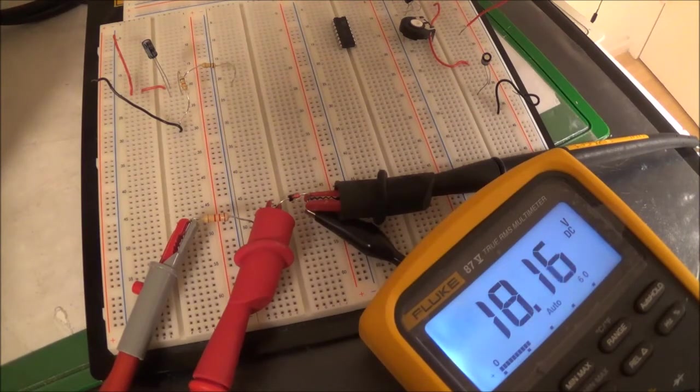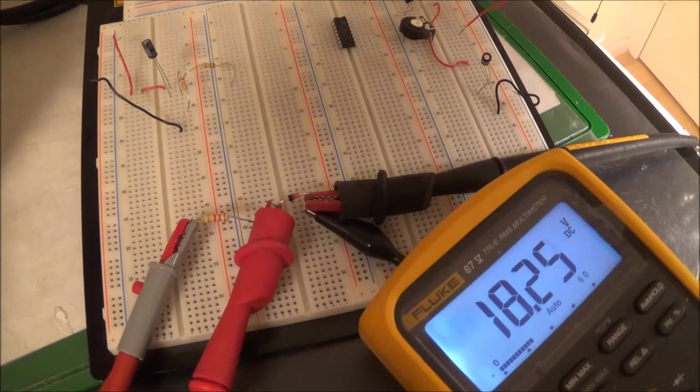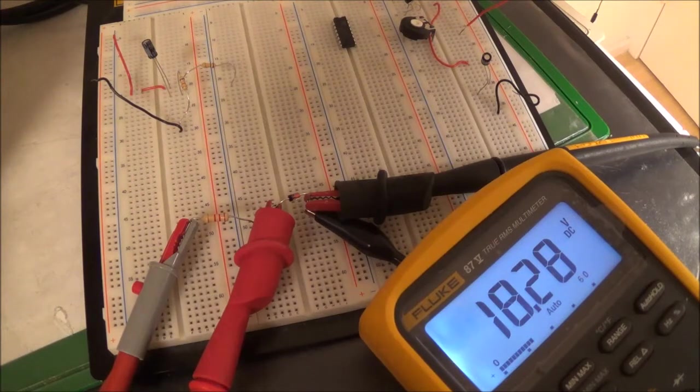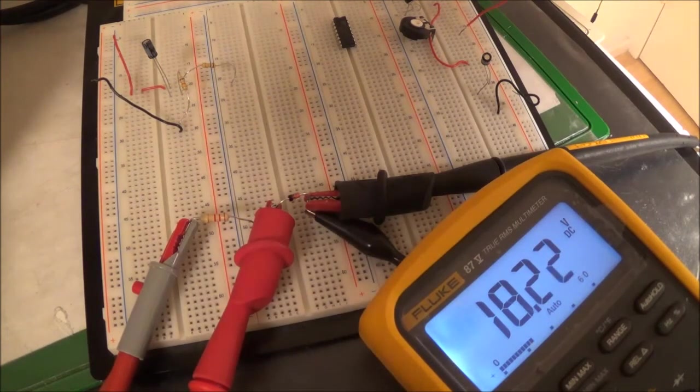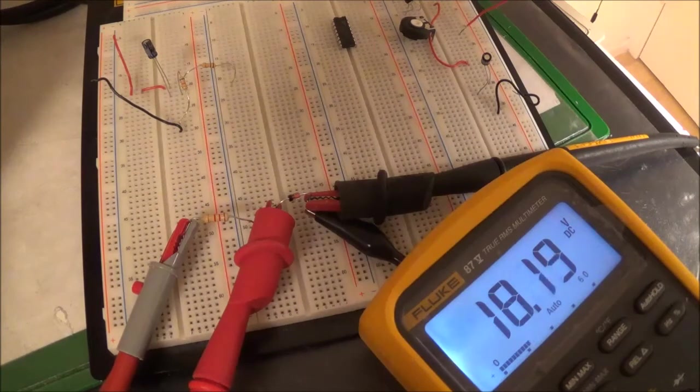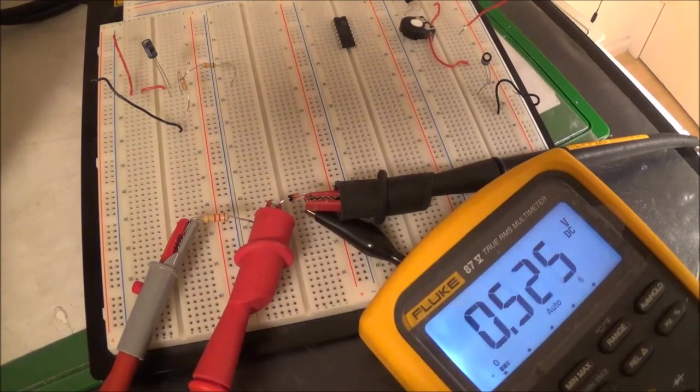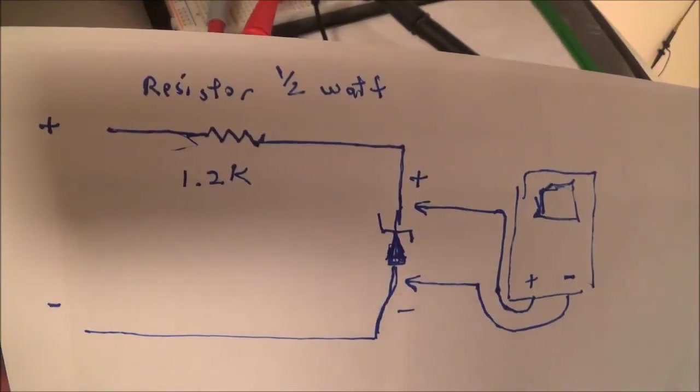I'm up to 18 volts already, and it looks like it's stopping right there. So I would say this is around an 18.2 volt zener diode. So that's how you figure that out.